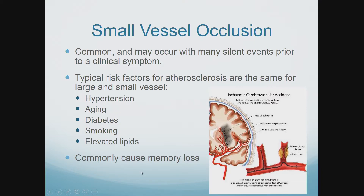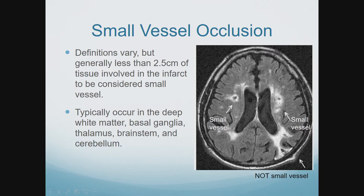Our typical risk factors for atherosclerosis are the same for large and small vessel disease. These patients have soft symptoms — they don't necessarily have focal hemiplegia; they may have memory loss or mood disorders. On MRI you'll see many of these tiny changes before the patient presents with a clinical syndrome.